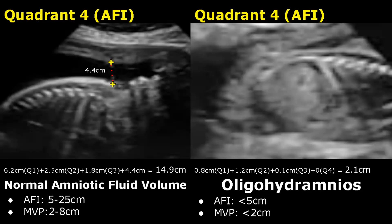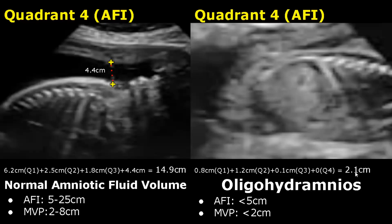For the normal fluid volume, by adding the values of all four quadrants, we get an AFI value of 14.9 cm. And for Oligohydramnios, it only adds up to 2.1 cm.